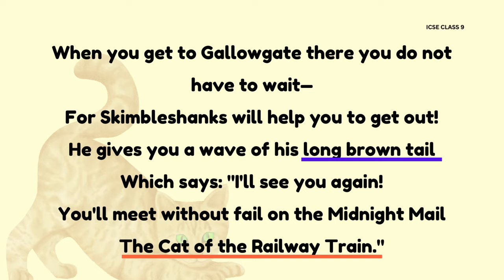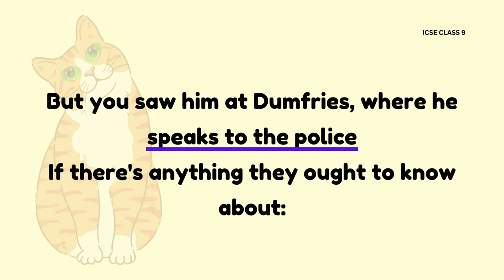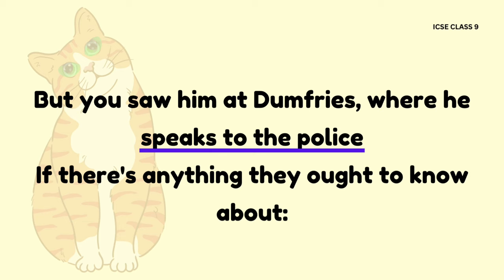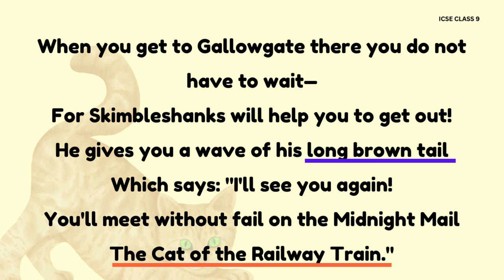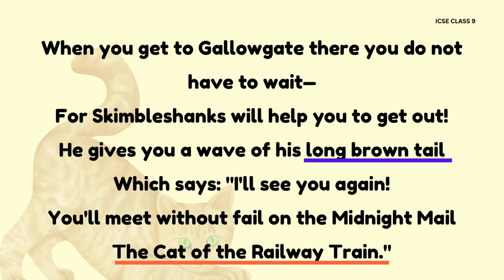But you saw him at Dumfries, where he speaks to the police if there's anything they ought to know about. When you get to Galashiels, then you do not have to wait, for Skimble Shanks will help you get out. In line 58, the phrase 'speaks to the police' shows visual description and is therefore an example of visual imagery. He gives you a wave of his long brown tail, which says 'I'll see you again.' You will meet without fail on the midnight mail, the cat of the railway train. In line 62, the phrase 'long brown tail' is a metaphor, used as metaphorical language to convey Skimble Shanks, the railway cat. Line 65, the last line of the poem — 'the cat of the railway train' — has been repeated in the last line of the previous stanza as well, and is therefore an example of repetition.